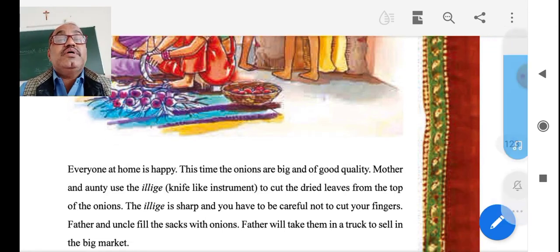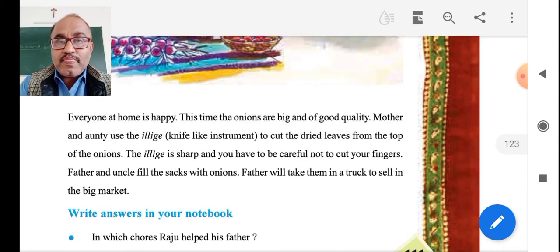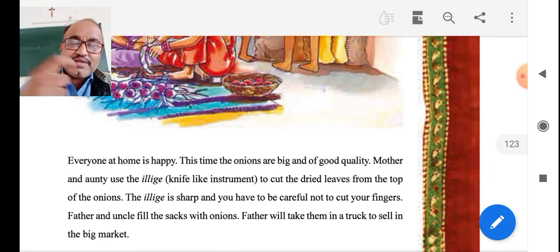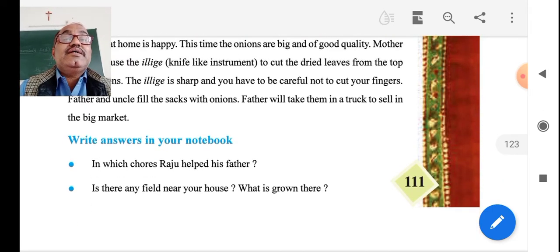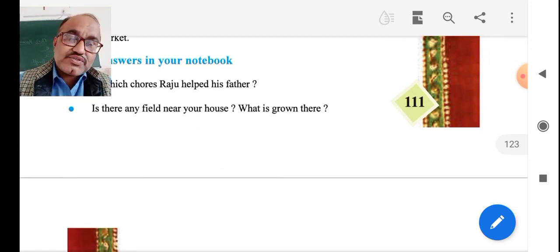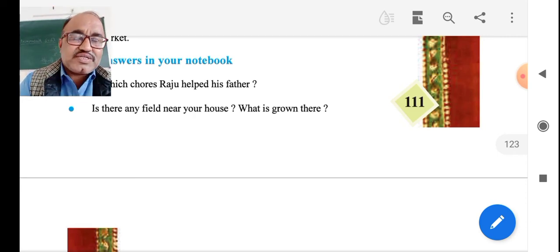So, mother and auntie use elage that I already explained you. Elage means one sharpening tool to cut the onion plants and separate the onion from it. Then, very next, in which course Raju helped his father? And is there a field near your house? What is grown there? Then you can put your answer yourself. It is my homework question.